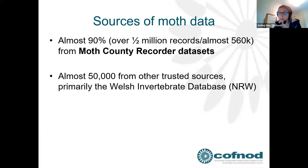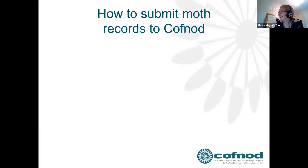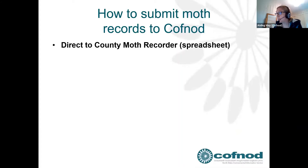Covnod also holds almost 50,000 records from other trusted sources, mostly from the Welsh Invertebrate Database maintained by Natural Resources Wales. Over 28,000 records have required verification, which is where county recorders play such an important role — checking records and making sure they're trustworthy, because some species are very difficult to identify and could easily be confused with something similar.